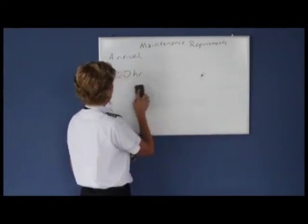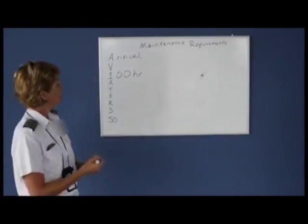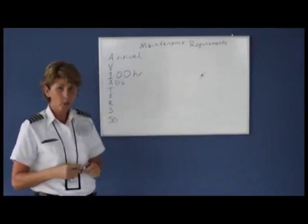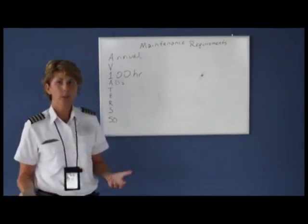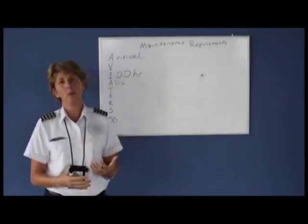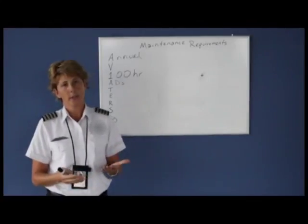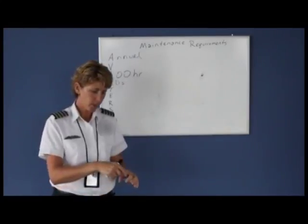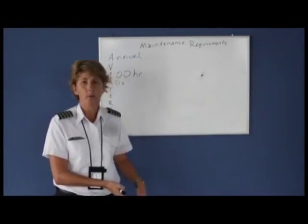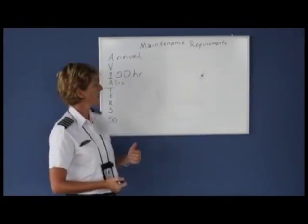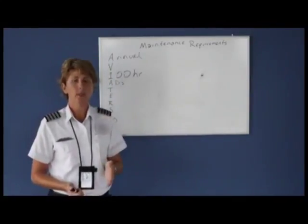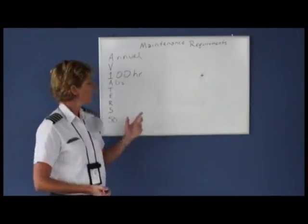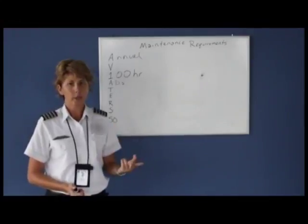Moving on, the A in AVIATORS stands for ADs — airworthiness directives. It's when the FAA has become involved with some kind of chronic problem with the airplane, such as the starter malfunctioning or the seat tracks failing and a seat sliding backwards on takeoff. The FAA may require you to check it on a regular interval, or it could be a one-time replacement. An AD could be a one-timer or recurring, with recurring ones falling on intervals like every 50 hours, 100 hours, at engine overhaul, or associated with an annual inspection.